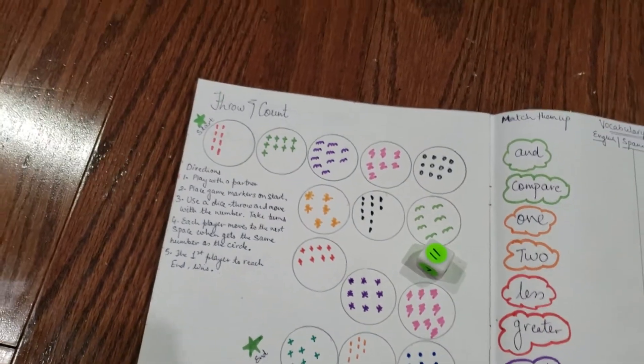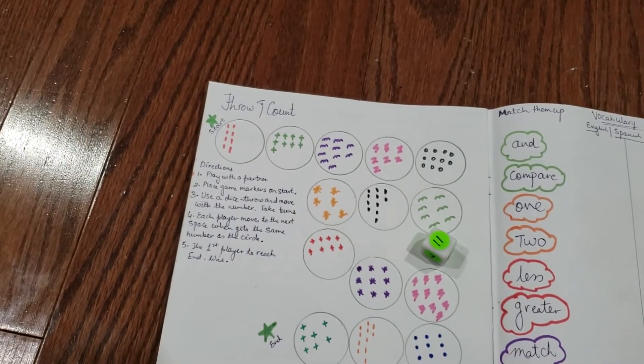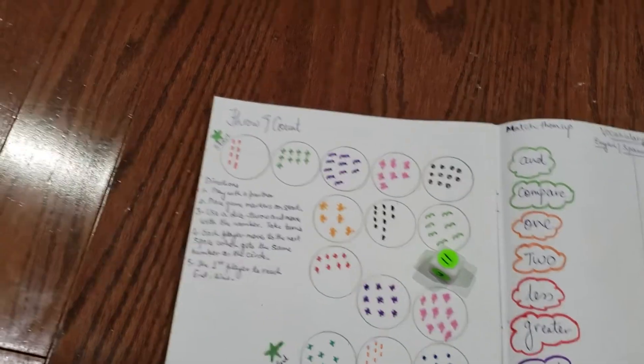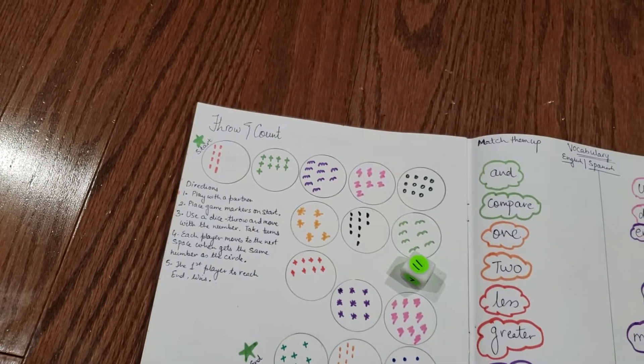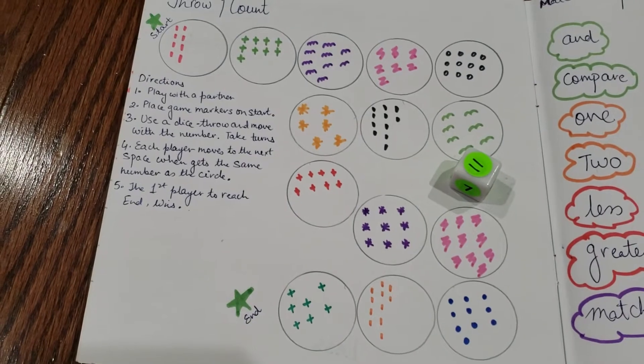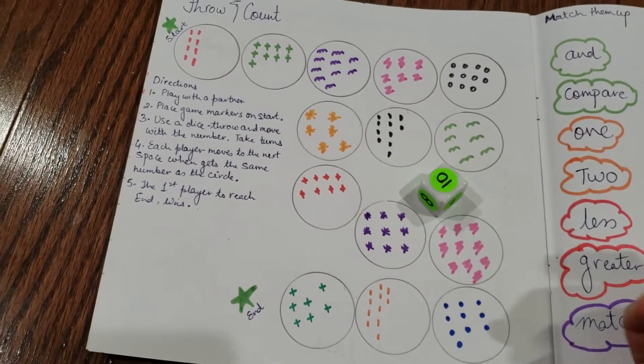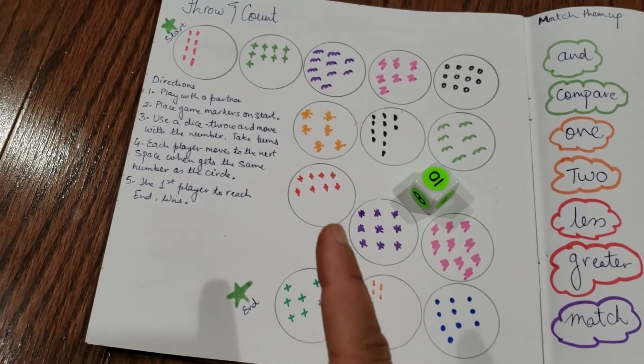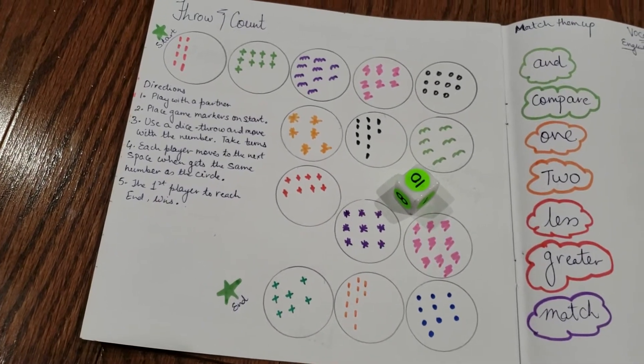You have a lot of directions here: play with a partner, place game markers on the start, use a dice, throw and move with the number, take turns. Each player moves to the next base when he gets the same number as the circle. If it's ten, they need to count - only then can they move forward. Otherwise they'll be staying at the same time. The first player to reach the end wins.